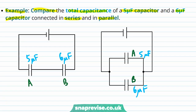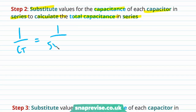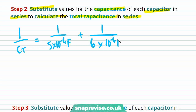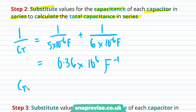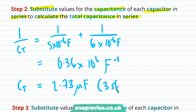The capacitance of A is 5 µF and the capacitance of B is 6 µF. So we find that 1 over the total capacitance is equal to 0.36 × 10⁶ µF⁻¹, and therefore the total capacitance is equal to the inverse of this, which is 2.73 µF to three significant figures.